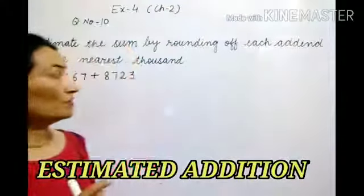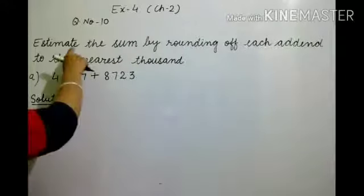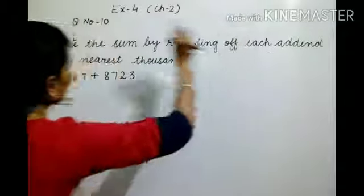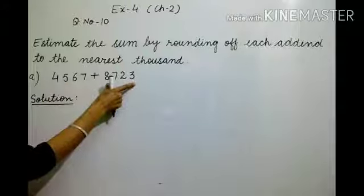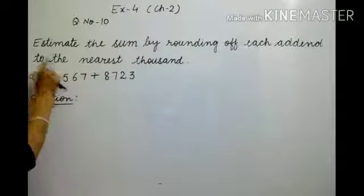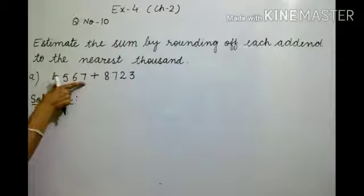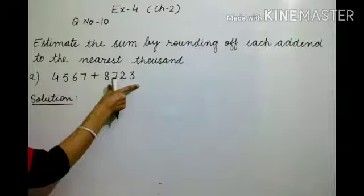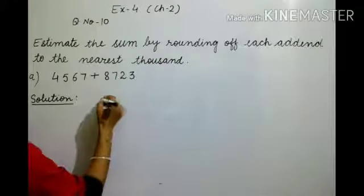In the previous video we solved questions 7, 8, and 9. Now we will solve question number 10. First we will read the statement: estimate the sum by rounding off each addend to the nearest thousand. Addends are the numbers which we add. We will round off each number separately to the nearest thousand, then add the estimated values.